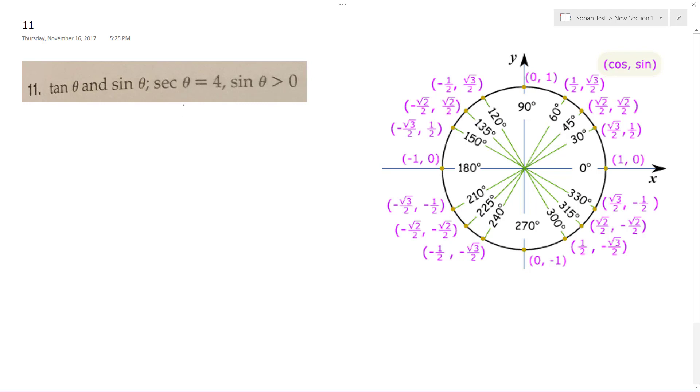So if sine, secant is the cosine, and then if the sine, what's the inverse of the cosine, and sine are positive, this is in quadrant one.